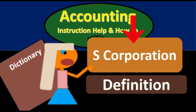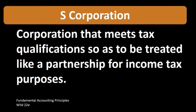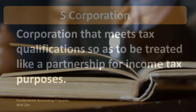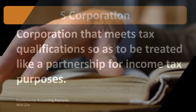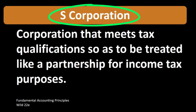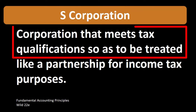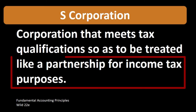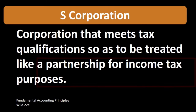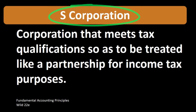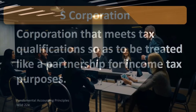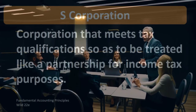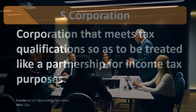In this lecture we will define S corporation according to Fundamental Accounting Principles, Wild 22nd edition. An S corporation is a corporation that meets tax qualifications so as to be treated like a partnership for income tax purposes. Therefore, an S corporation is a type of corporation, but we're trying to get the best of both worlds from something like a partnership and something like a corporation.